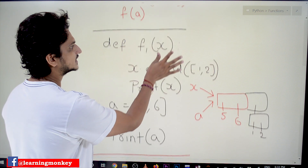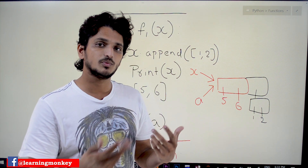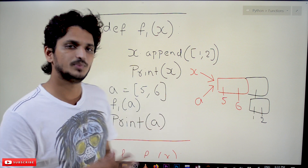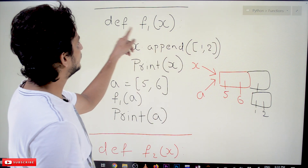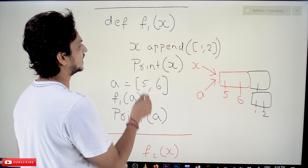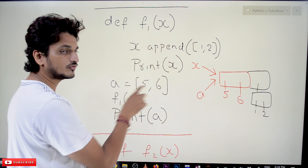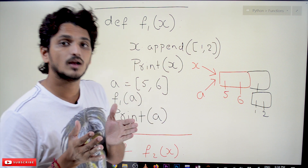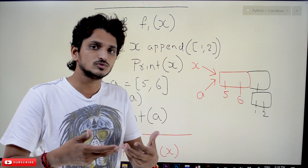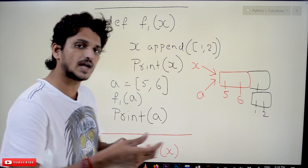Next, we will take one more example to understand mutable and immutable objects. We discussed about mutable and immutable objects. We will check different situations — how mutable and immutable objects behave when calling a function. We define function f1 of x, and in this we are doing x dot append of a list, then print x. This is the body of the function. Now we define a list a equal to 5 comma 6. List is a mutable object — we can modify that object without changing its memory location. That is what mutable object means.